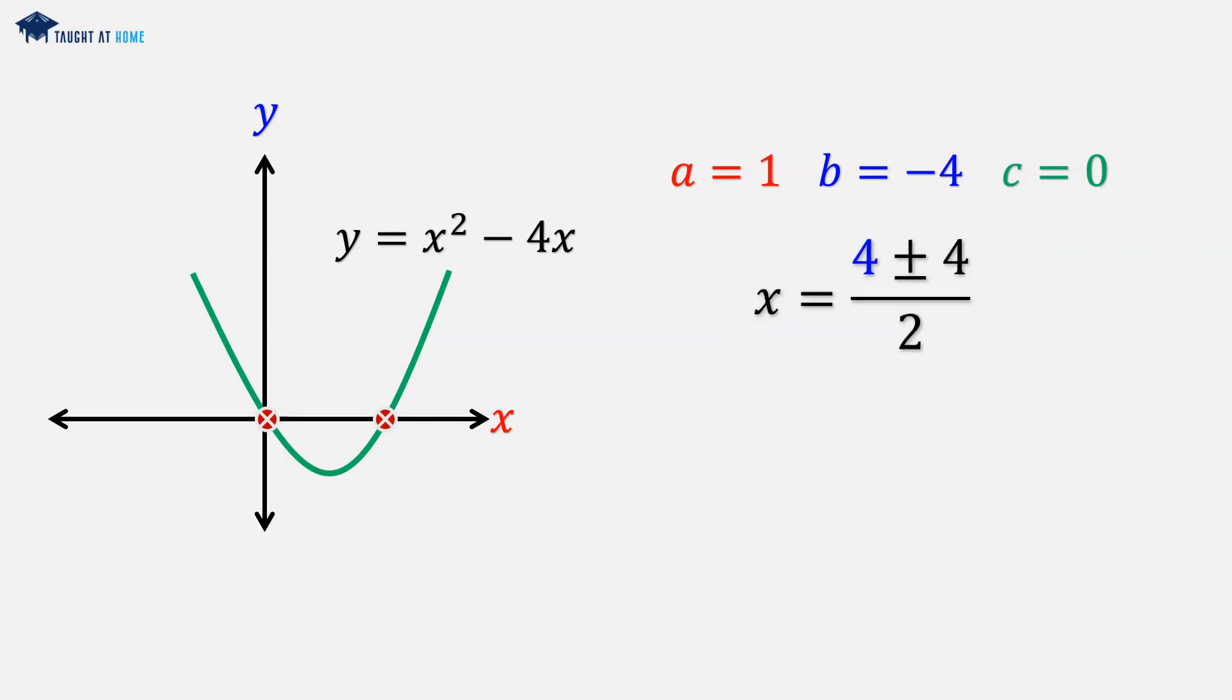The square root of 16 is 4, so we've got 4 plus or minus 4 over 2. We can split that up into two fractions: 4 over 2 is 2 plus 4 over 2 is also 2. So we're going to have two solutions, x1 at 4 and x2 at 0.